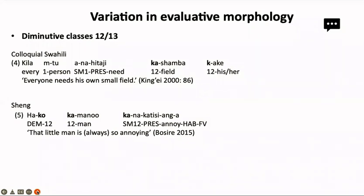Another parameter of variation we find interesting is in evaluative morphology, particularly to do with the diminutive found in noun classes 12 and 13. We see variations in the use of this class marker, which is particularly common in colloquial Swahili — for example 'kijila mutu anahitaji kashamba kake' or in Sheng 'hako kamono kana katisianga.' In standard Swahili one would say 'shamba lake' or 'hako kamono,' or simply 'mano' or something like that.